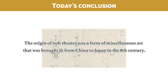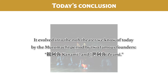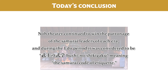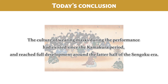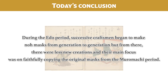The origin of no-theater was a form of miscellaneous art that was brought in from China to Japan in the 8th century. It evolved into the no-theater we know of today by the Muromachi period by two famous founders, Kangami and Zeami. No-theater continued to win the patronage of the samurai leaders of each era, and during the Edo period was considered to be Bushi no Shikigaku, meaning the samurai code of etiquette. The culture of wearing masks during the performance had existed since the Kamakura period, and reached full development around the latter half of the Sengoku era. During the Edo period, successive craftsmen began to make no-masks from generation to generation, but from there, there were fewer new creations, and their main focus was on faithfully copying the original masks from the Muromachi period.